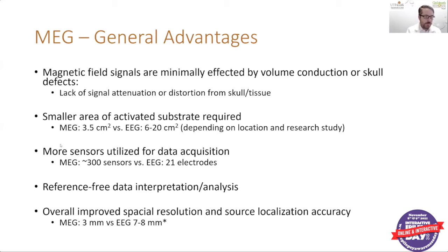MEG also has more sensors utilized for data acquisition — around 300 sensors versus the EEG with 21. There is also overall improved spatial resolution and source localization accuracy. The MEG can typically be considered accurate up to 3 millimeters, whereas EEG is around 7 to 8 millimeters, which also depends on the individual study.